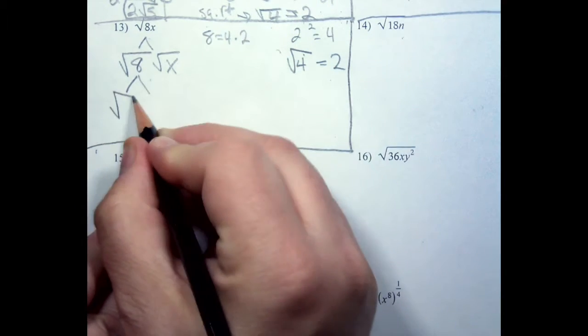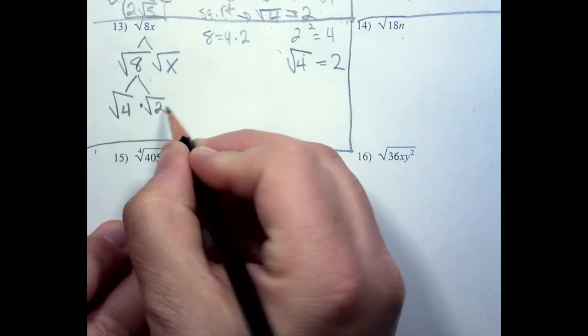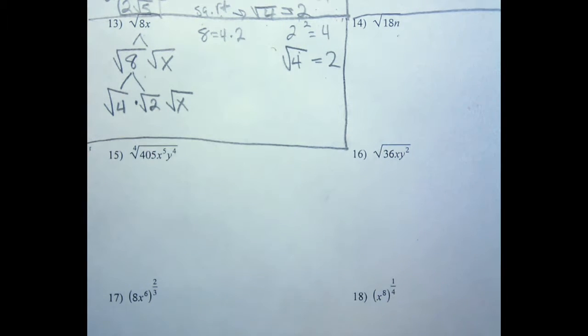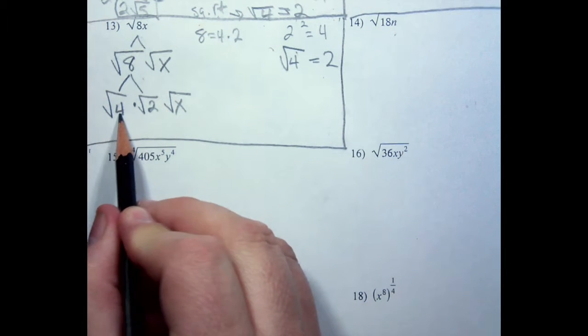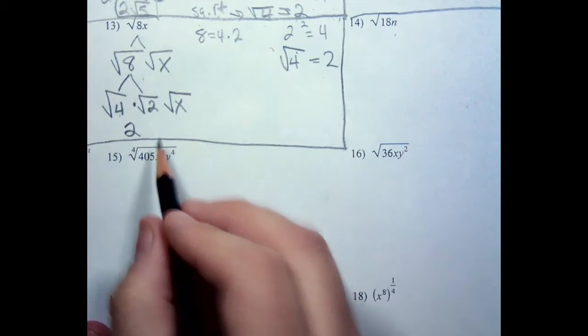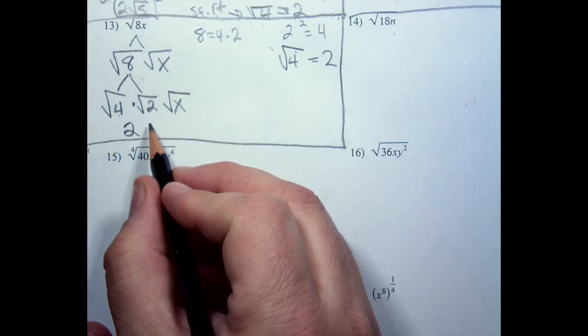I can take that and separate that into the square root of 4 times the square root of 2 times the square root of x. So I have the square root of 4, which is 2. Now what I'm going to do with this is, I have the square root of 2, can't simplify that anymore. I have the square root of x, can't simplify that anymore, so I'm just going to toss those right back under the same radical.